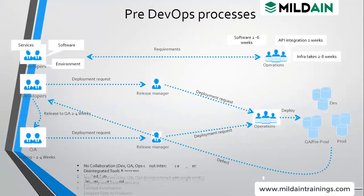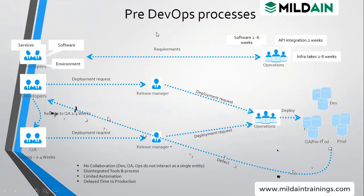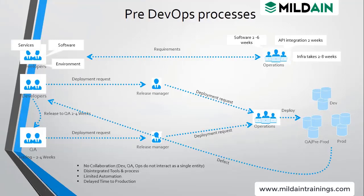In the pre-DevOps model, the developer was getting information only at the end. But now with DevOps tools, immediate feedback is given to developers — we don't have to wait till the end. In pre-DevOps there is no collaboration between dev, QA, and ops; they do not interact with each other. Developers send code to QA without collaboration. They work in silos, each using their own tools, with unintegrated tools and processes and mostly manual tasks with limited automation.